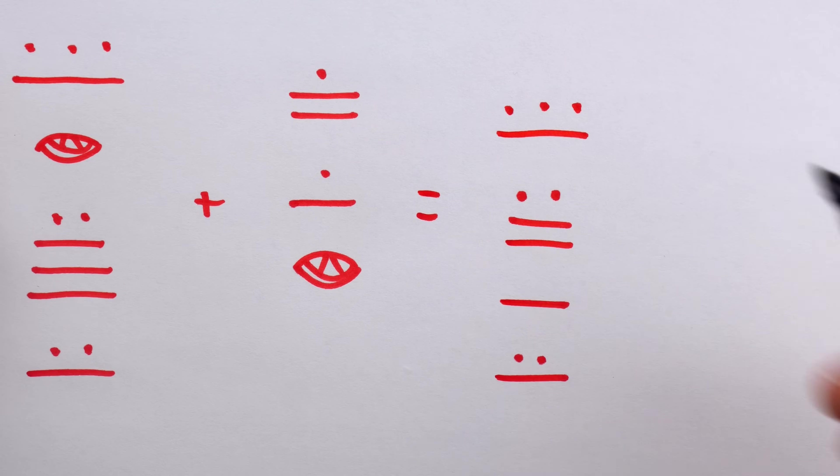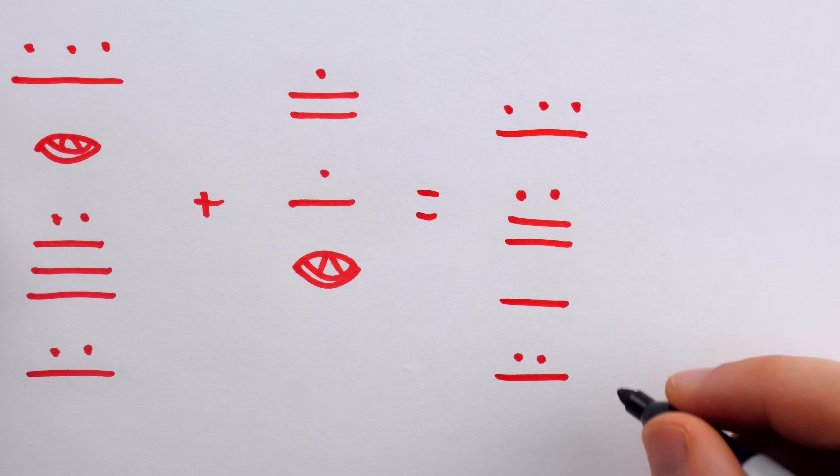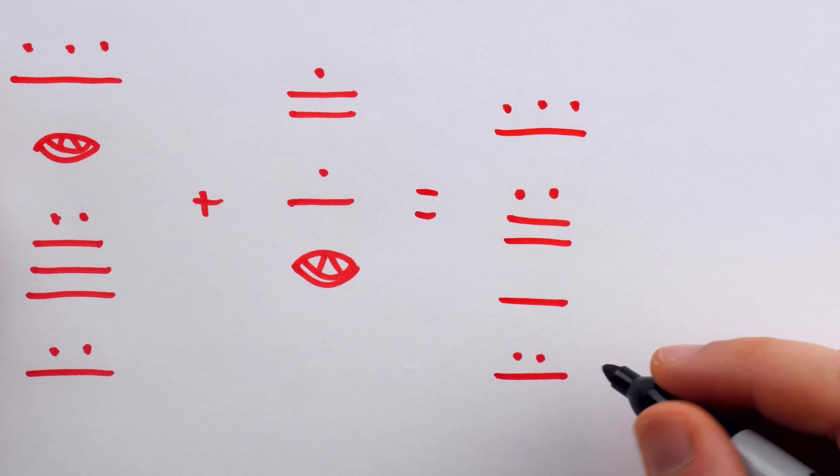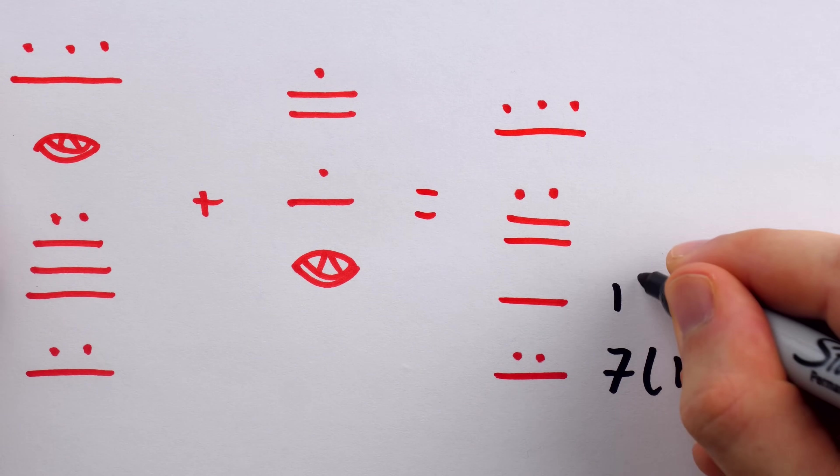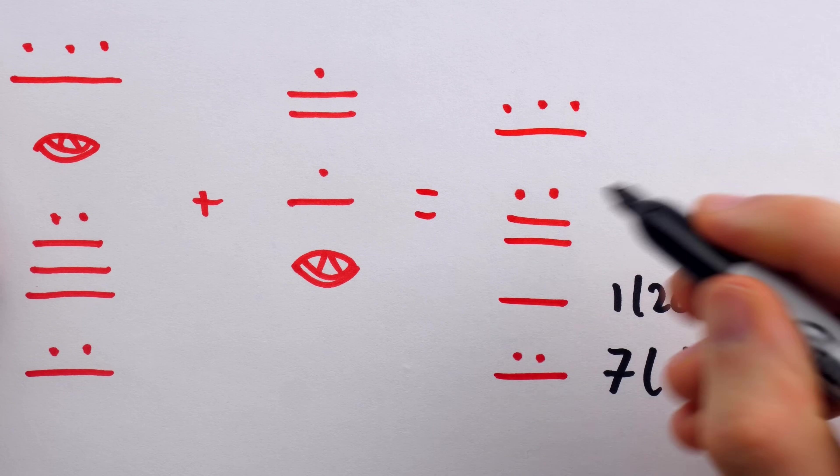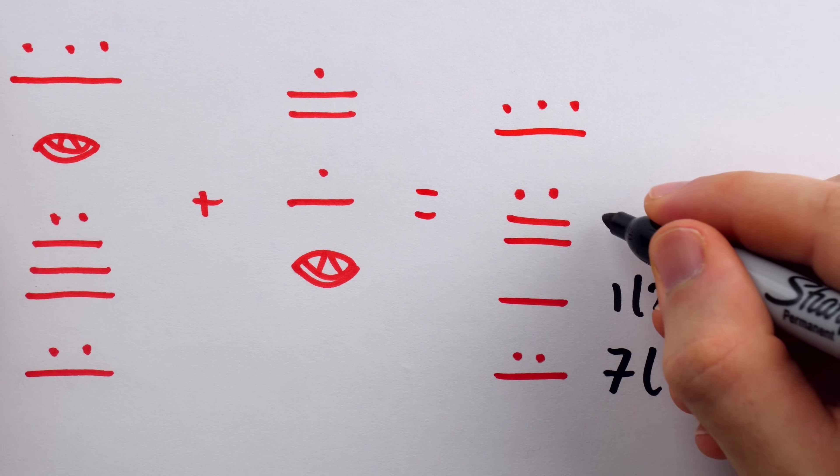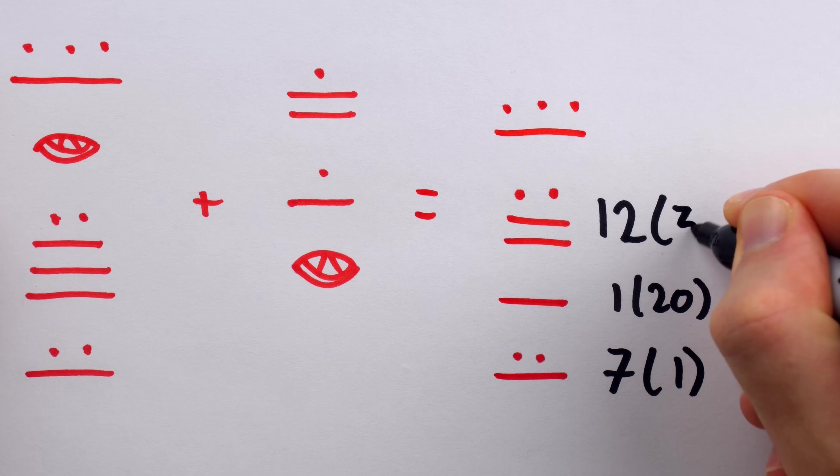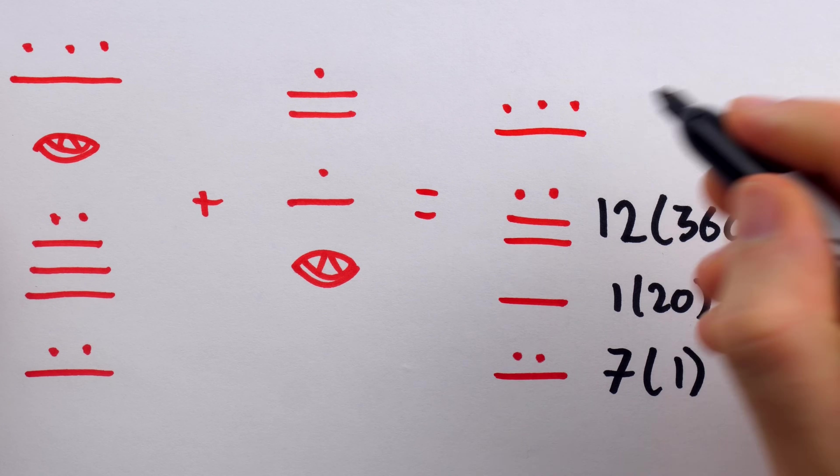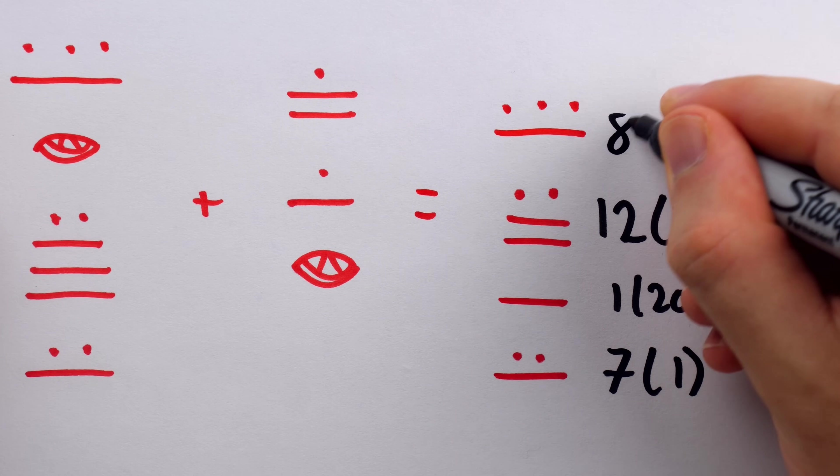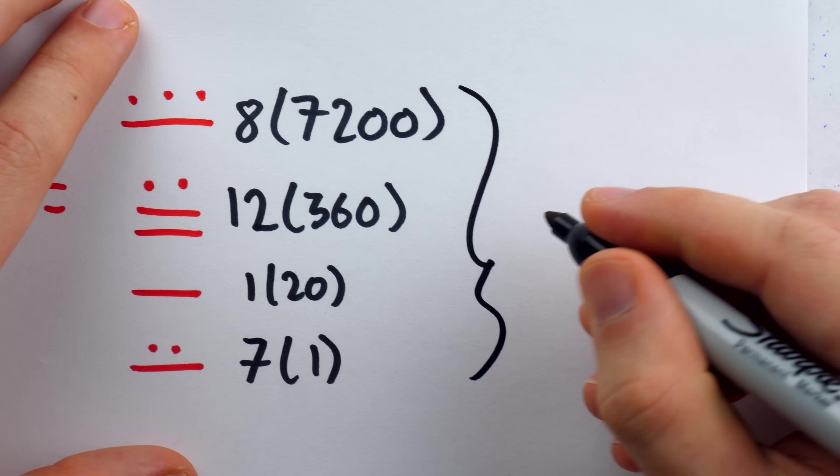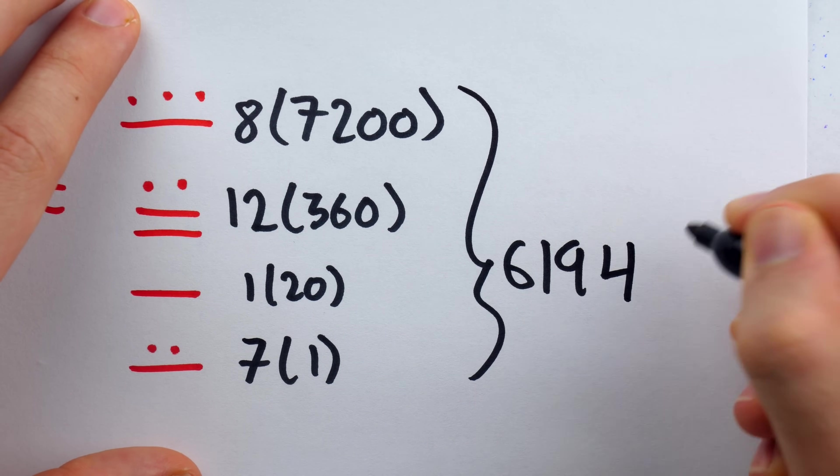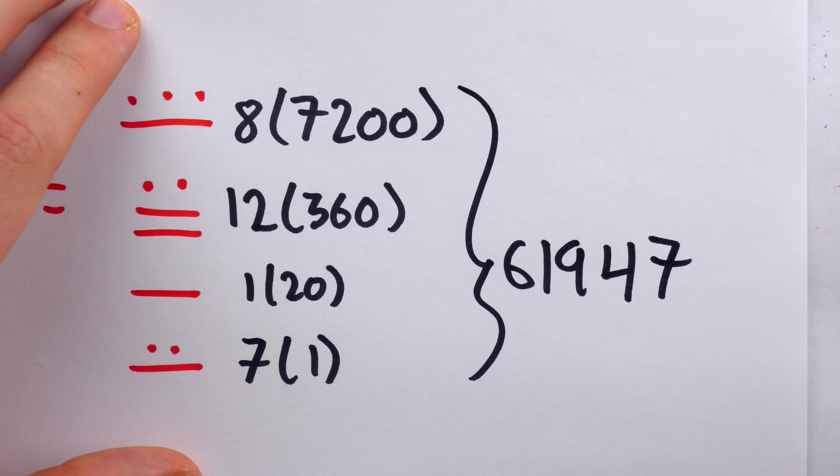Now that wasn't so bad. What does this number on the right actually equal to? Well, in the first place value, we have 7 ones. In the second place value, we have 120. In the third place value, we have 12 360s. And in the fourth place value, we have 8 7,200s. Add this all up, and we get 61,947 back in our comfortable decimal system.